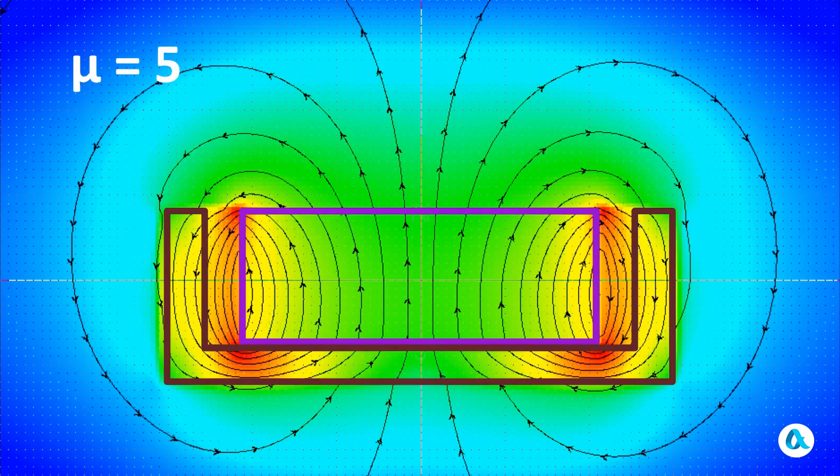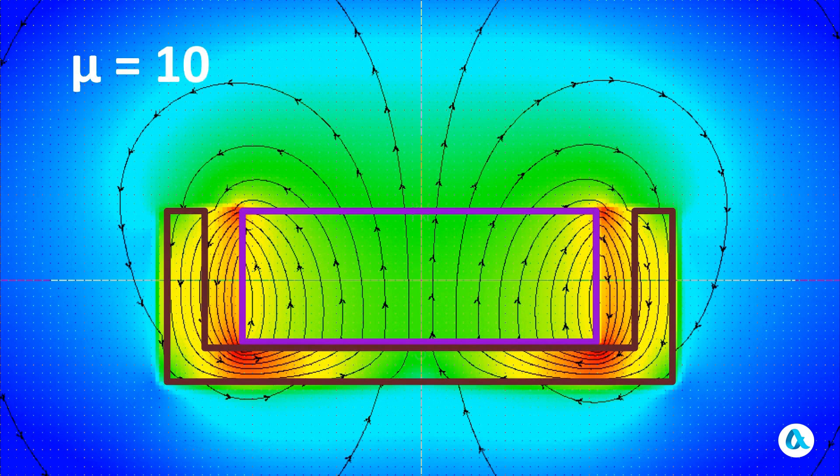And already at M equal to 5, the magnetic circuit partially intercepted the field under the magnet. At M equal to 10, the interception intensified.